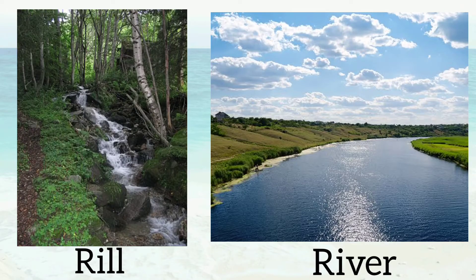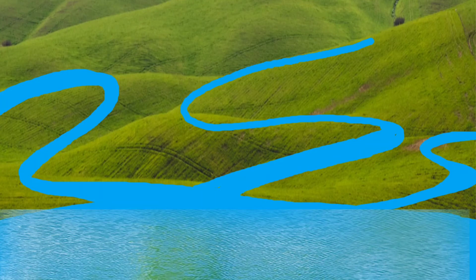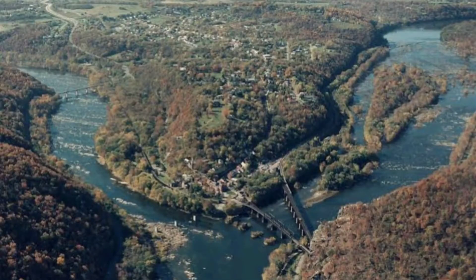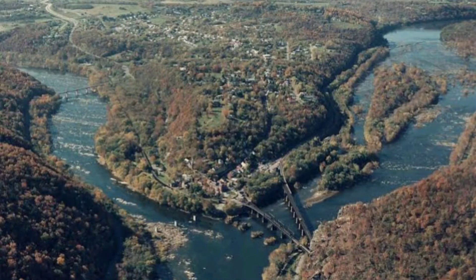Rills are smaller and rivers are bigger. Rills, brooks, and streams join each other to form a river. Rivers which join to make a bigger river are called its tributaries.